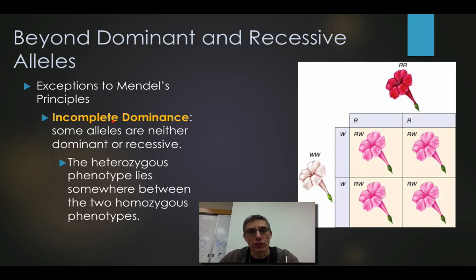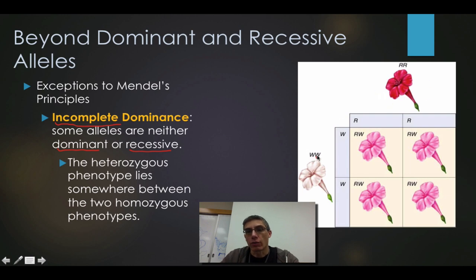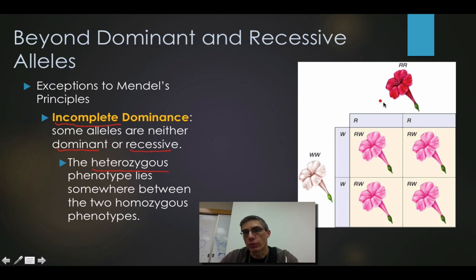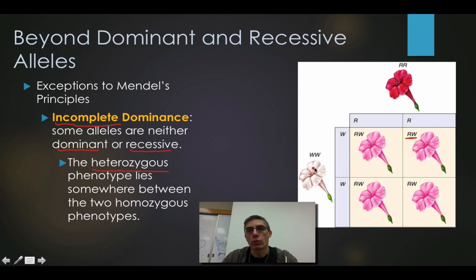The first one we're going to look at is called incomplete dominance. Like the name states, we have some alleles that are neither dominant nor recessive — you don't have one allele that's going to overpower another. In a typical dominant versus recessive situation, we have a red flower and a white flower. But in this case, we actually have a heterozygous phenotype that lies somewhere between the two homozygous phenotypes — we actually have a pink color. We don't have red, we don't have white, we now have pink.